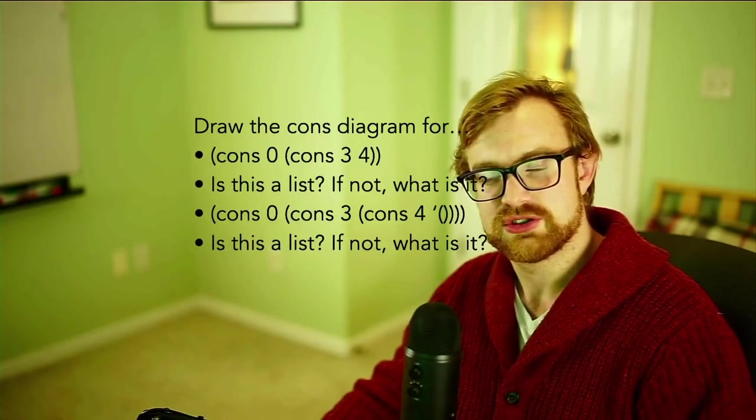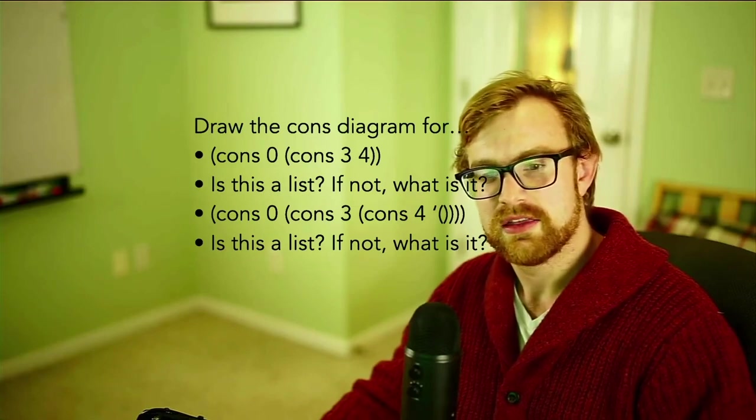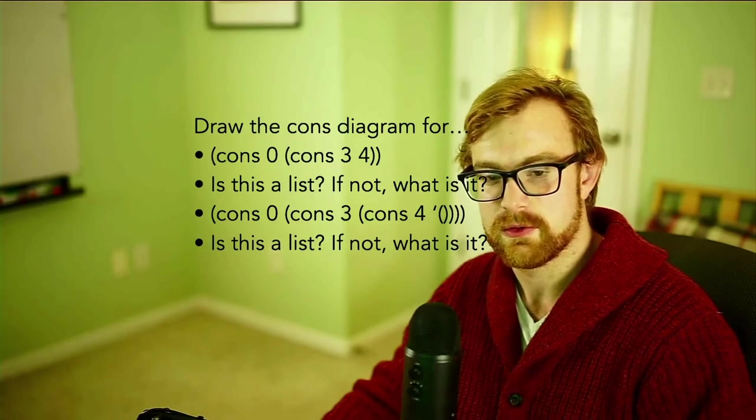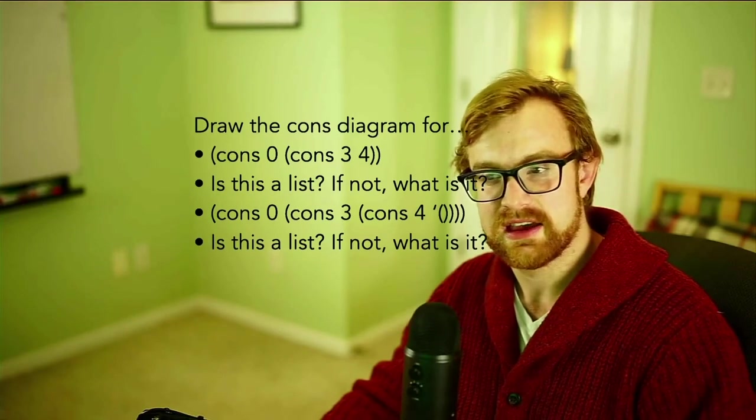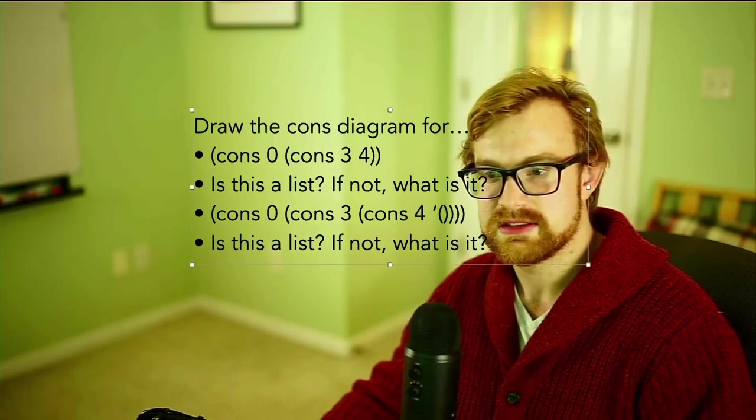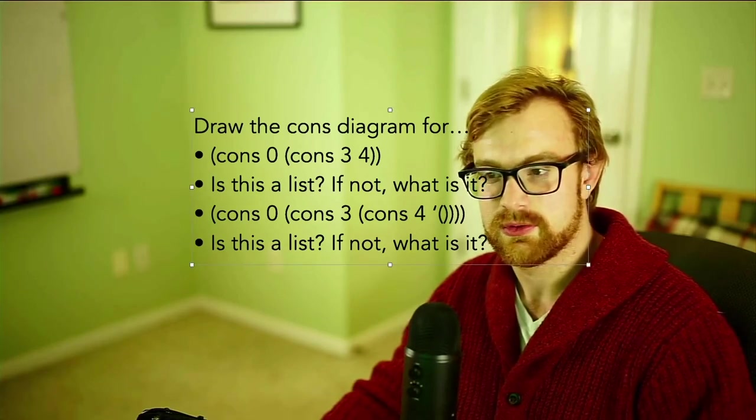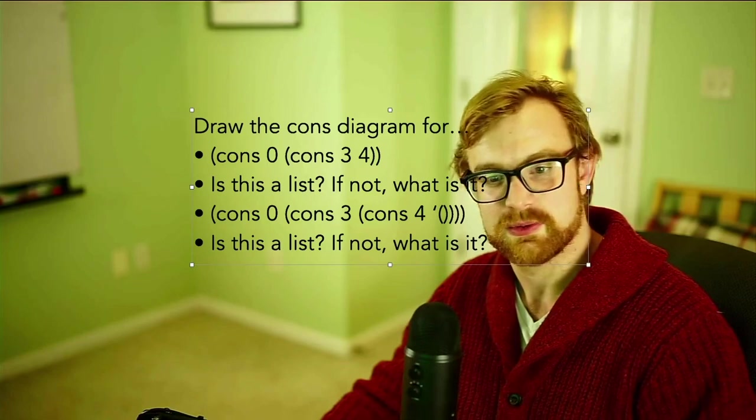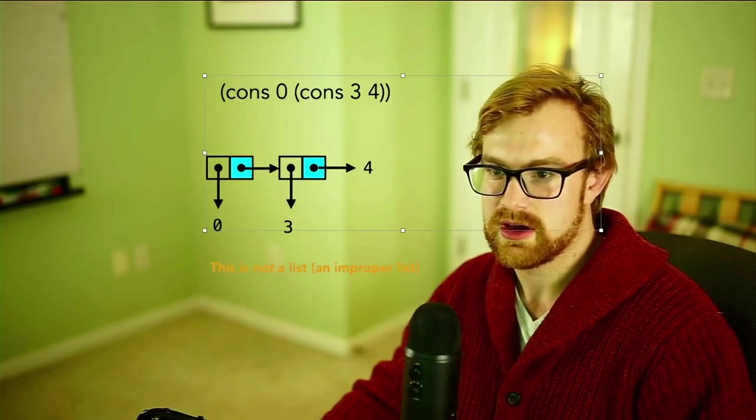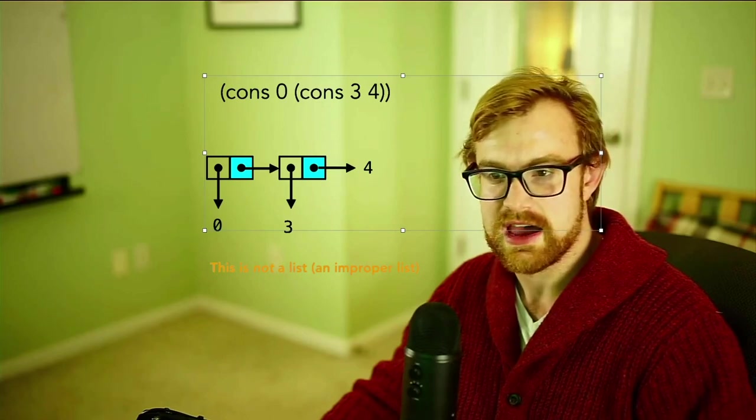So to wrap this up, let's draw cons diagrams for the following two things. So I've got the cons of zero, cons of three, four. Then I'm going to ask, is that a list? If not, what is it? And then the other one, cons zero, cons three, cons four and then empty list. What about this one? All right, so the first one, cons zero, cons three, four. Let's draw a cons diagram for that. Okay, so we know we've got a cons cell. So we're going to draw a cons cell right here.